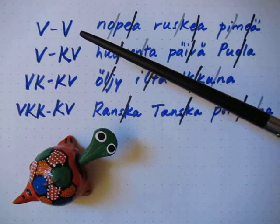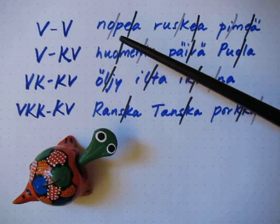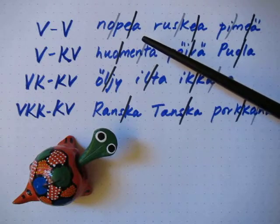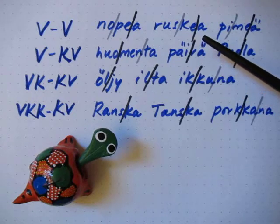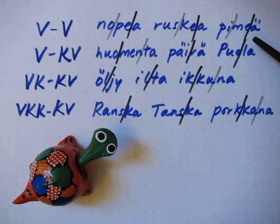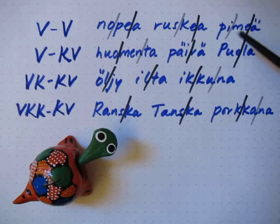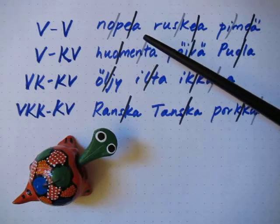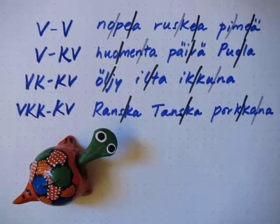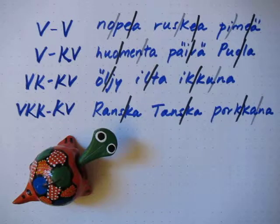So we have vocali-vocali, and some example words here: nopea, ruskea, pimea. The black line here is the main syllable break we're talking about; the gray line is a subsequent syllable or one that matches a different pattern. For each of these rules, focus on the black line.